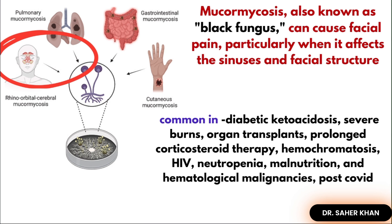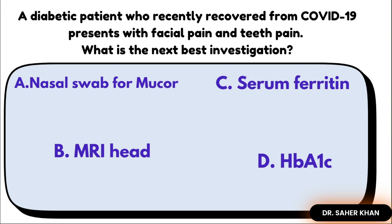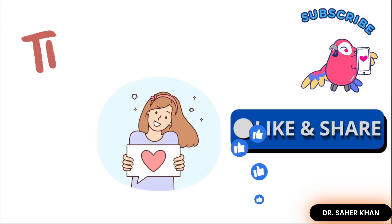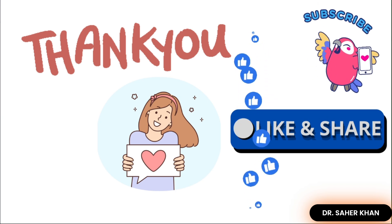The best investigation is MRI of the head. It is the first and best option, helping to visualize the extent of tissue damage and show how far the infection has spread. Some might choose nasal swab, but remember — the swab is used for confirmation, whereas MRI comes first to check the spread. So the answer is MRI; the nasal swab would be the second step.